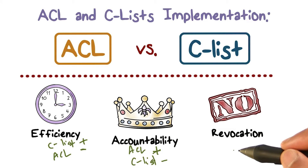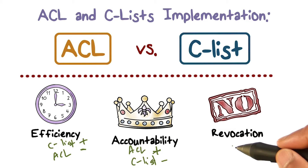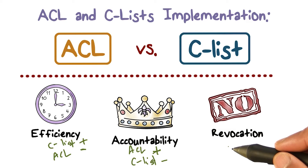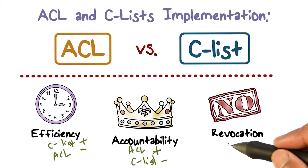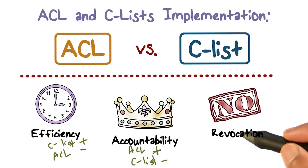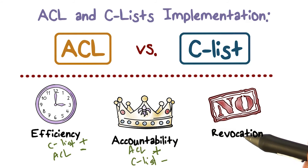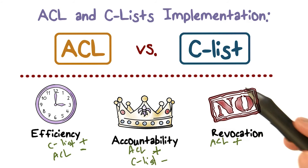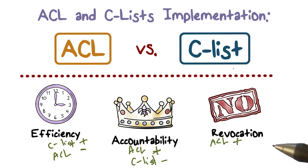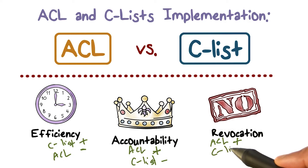Revocation means you gave someone permission to access a resource, but now you want to remove their access. With ACLs, if Alice wants to revoke Bob's access for file foo, it's easy — the system locates the ACL for foo, finds the ACE for Bob, and removes whatever permission is being revoked. ACL revocation is straightforward because all ACEs are in one place. With CLists, it's actually hard. The capability sits in Bob's catalog, and Alice can't simply go remove capabilities from Bob's catalog at will. So revocation is not easy with CLists.